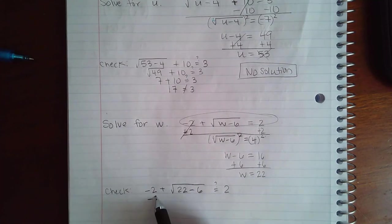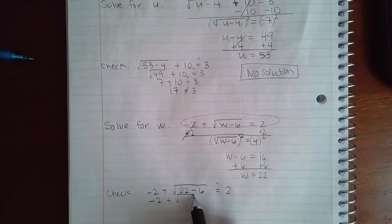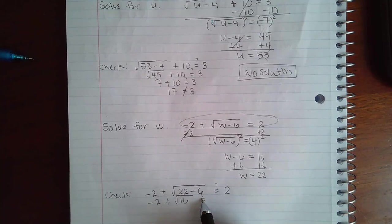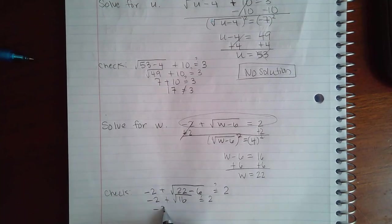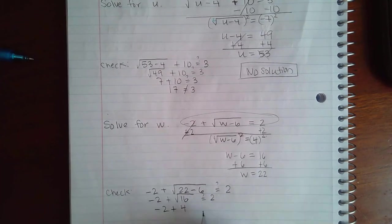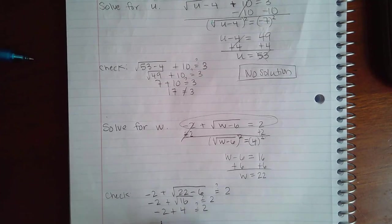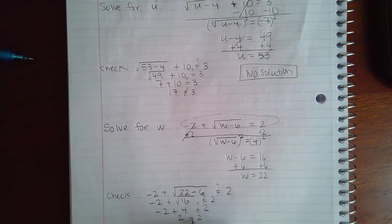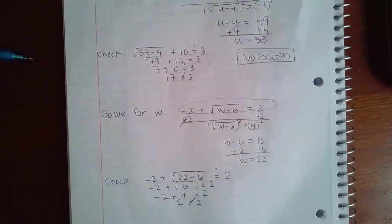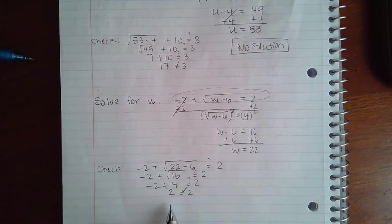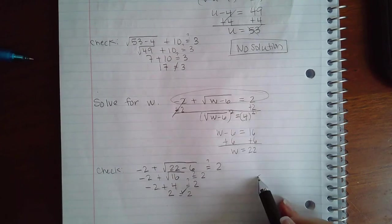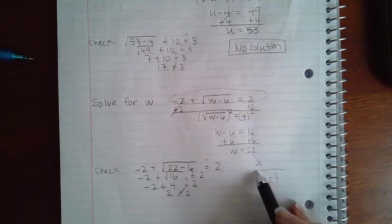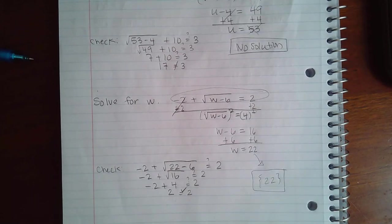So we get negative 2 plus, if I take away 6 I get 16, is that equal to 2? We don't know yet. The square root of 16 is 4, and then negative 2 plus 4 is actually positive 2, and these are the same. And so the fact that this one did check out means that 22 is our solution, so it does work out.